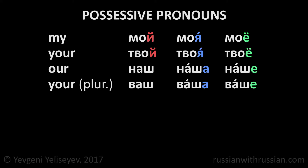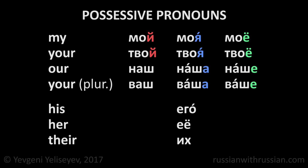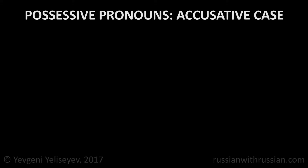If you don't know or don't remember how to determine the gender of the noun, please watch that lesson – the link is in the description. The pronouns his, her, and their have only one form for all genders: his – его, her – её, their – их.